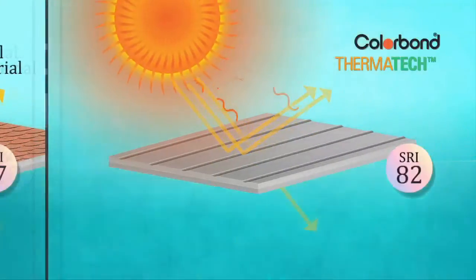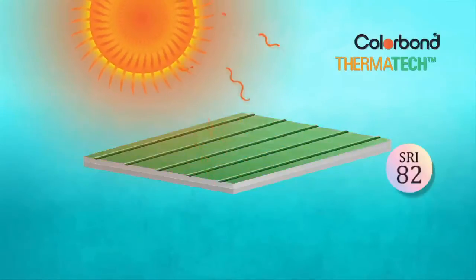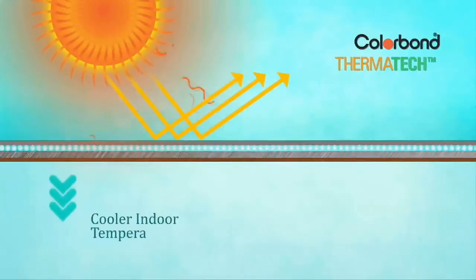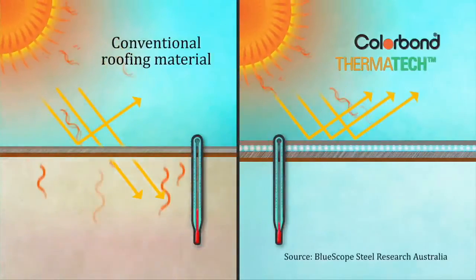Now, even darker colored Colorbond steel products are able to reflect more heat away, creating advantages of cooler roof and cooler buildings similar to lighter shaded colors. Our research and development division in Australia...